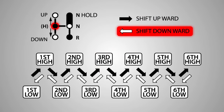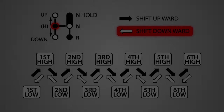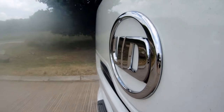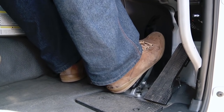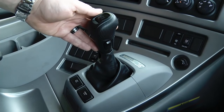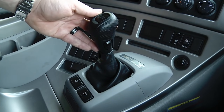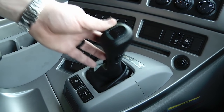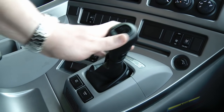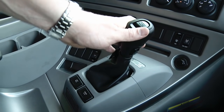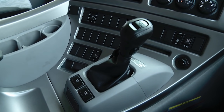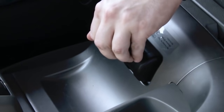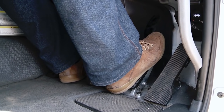The downshift pattern is in reverse order. When coming to an end of journey stop, depress the service brake pedal and select the neutral position by pushing the gear lever sideways to the right-hand side of the gear shift tower. To select the neutral hold position, push the gear lever straight forward from this position. Engage the park brake and release the service brake pedal.